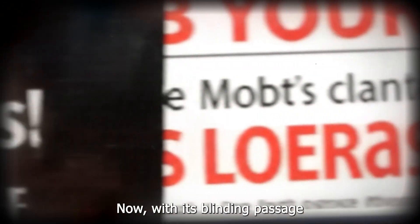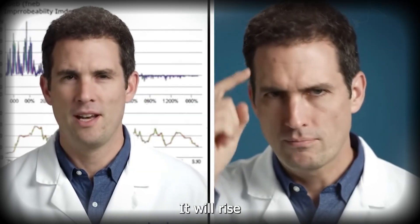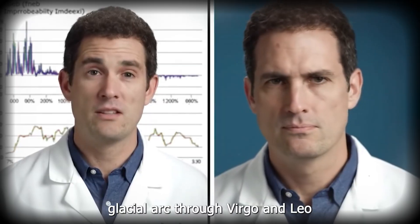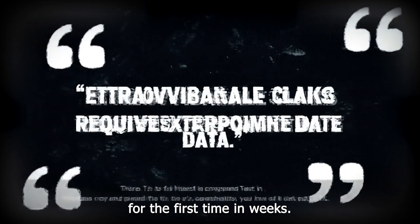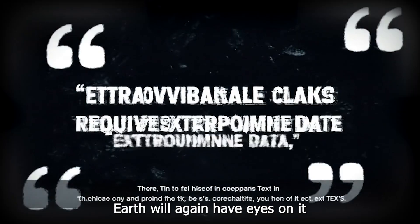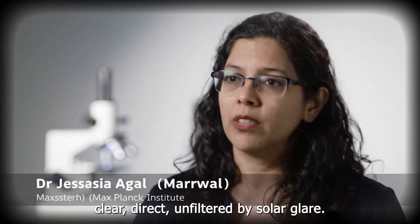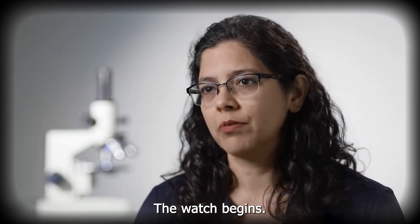Now, with its blinding passage behind the sun complete, the world is preparing for the return of 3i Atlas. By mid-November 2025, it will rise once more into the evening sky, cutting a slow, glacial arc through Virgo and Leo. For the first time in weeks, Earth will again have eyes on it, clear, direct, unfiltered by solar glare. Every major observatory on the planet is already primed for what comes next. The watch begins.